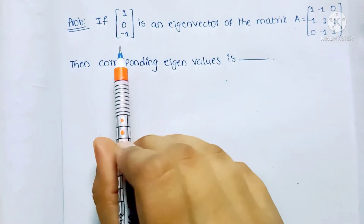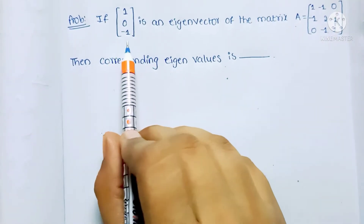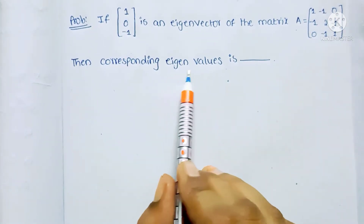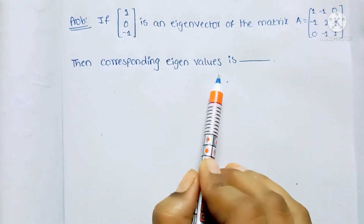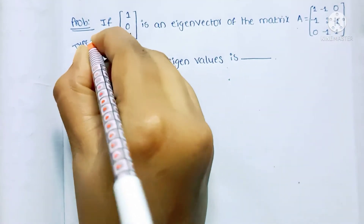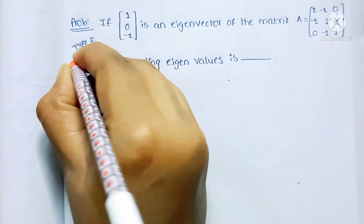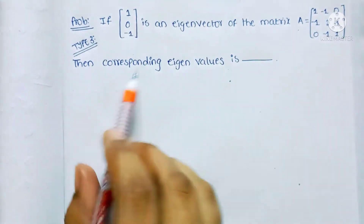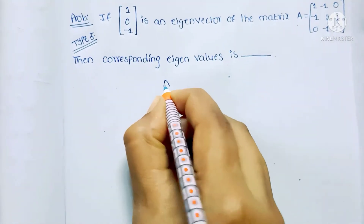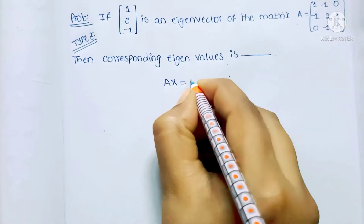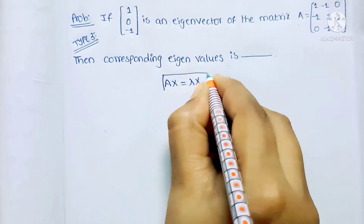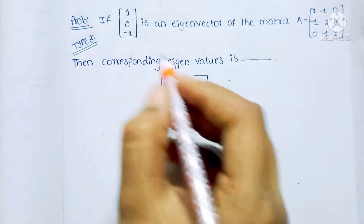Coming to the next problem, they are given an eigenvector and a matrix and are asked to find the eigenvalues. This is a Type 3 problem, and for this type of problem we use the same condition as before: Ax = λx.